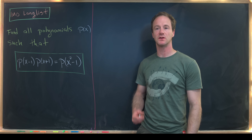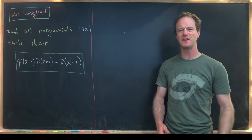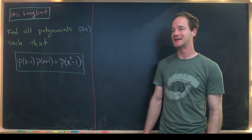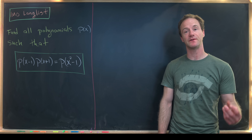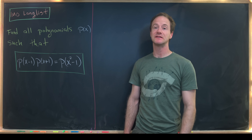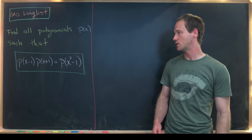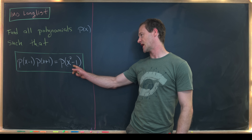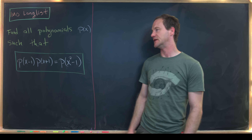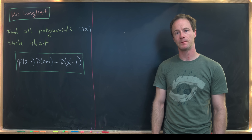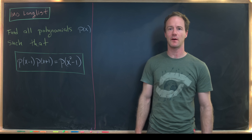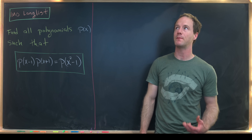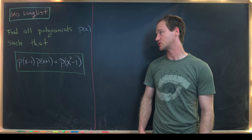Here we have a problem that was long-listed for the International Math Olympiad, and this is going to be a fairly quick video. Our goal is to find all polynomials p(x) satisfying the equation p(x-1)·p(x+1) = p(x²-1). We can factor x²-1 into (x-1)(x+1), which suggests a multiplicative property between x-1, x+1, and the polynomial p — reserved for very special polynomials.